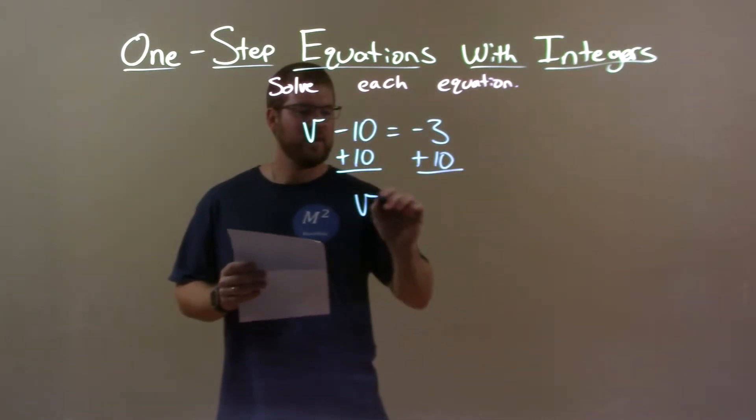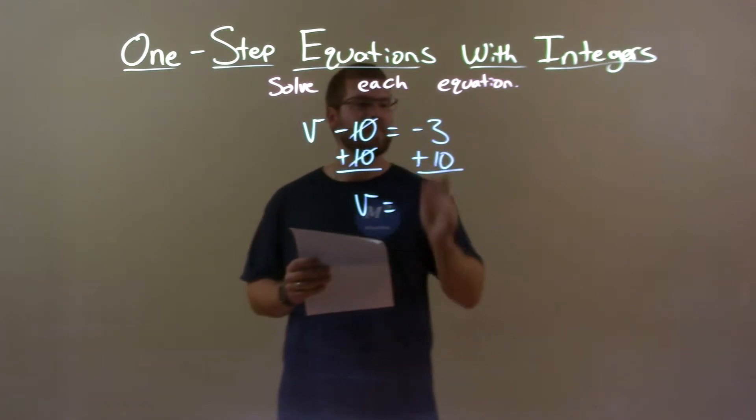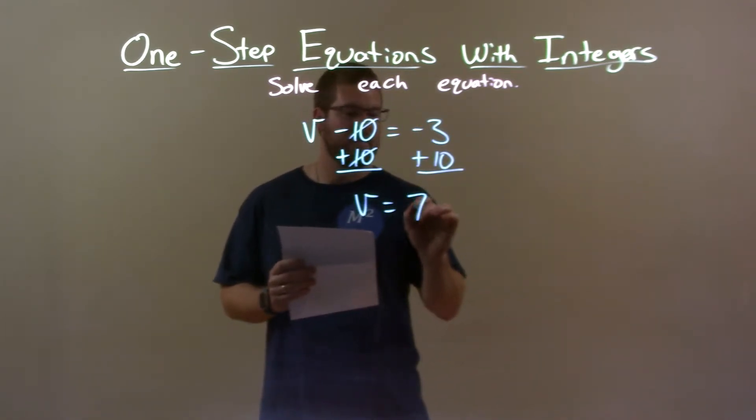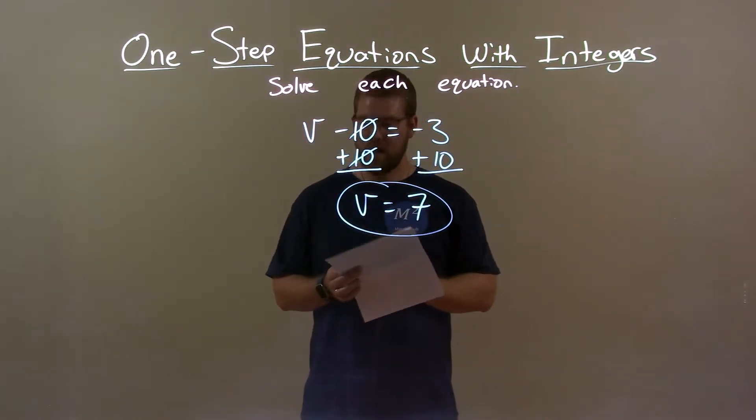That leaves me v by itself on the left because negative 10 and positive 10 cancel each other out. And negative 3 plus 10 is a positive 7. And so my final answer here is just v equals 7.